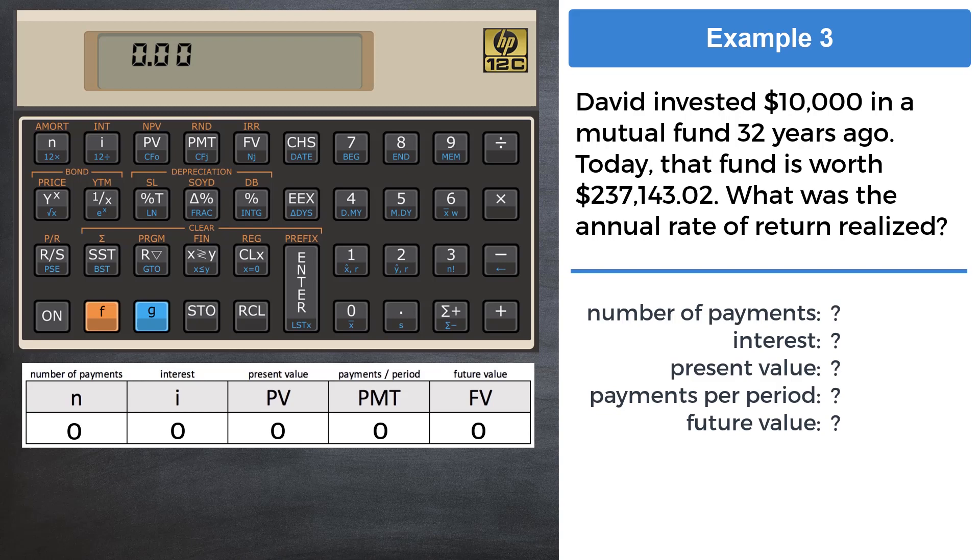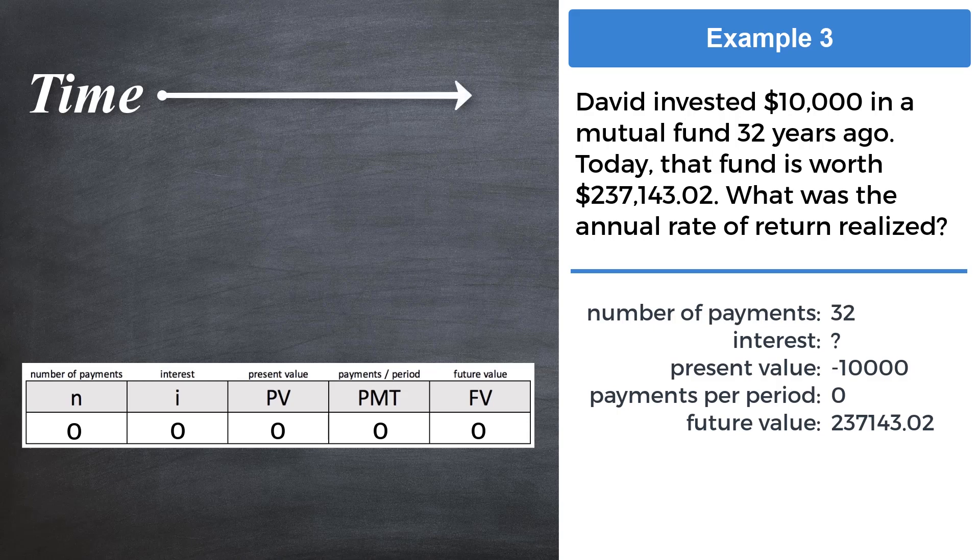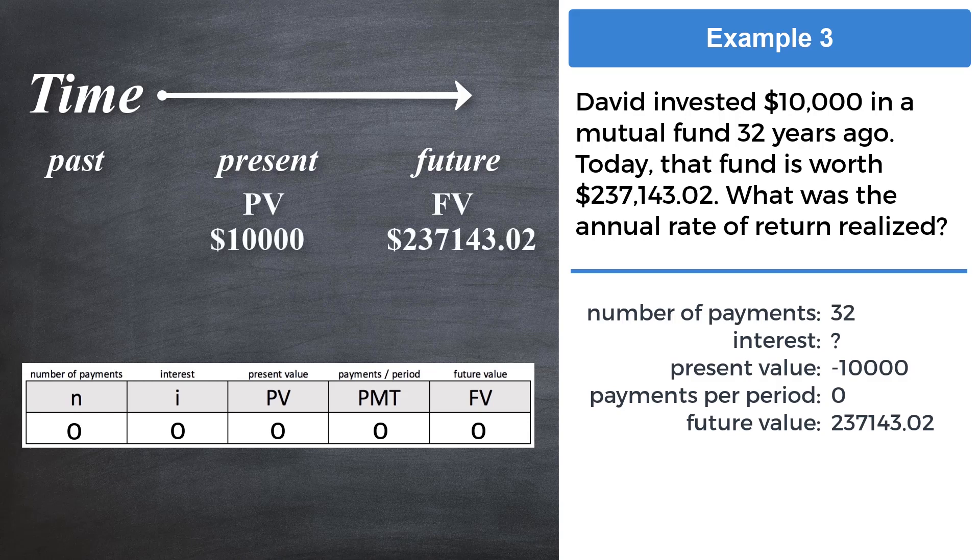The confusing part of this question is how to reconcile past, present, and future in this question with how we assign variables to registers. Here are our variables, and as in the earlier example one, the payments per period variable is zero. Why are they like this? Time, like money, has a flow, and that flow is always to the future. We consider the variables of this question from the time point of when the money was invested.